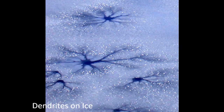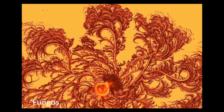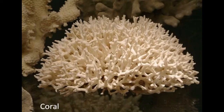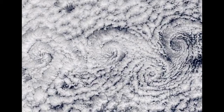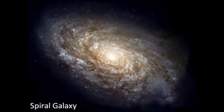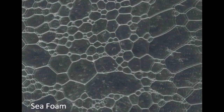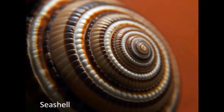Fractals appear everywhere in the world, from microscopic levels, under the water, in the air, and even in outer space. It's no surprise why fractal geometry is called the geometry of nature.